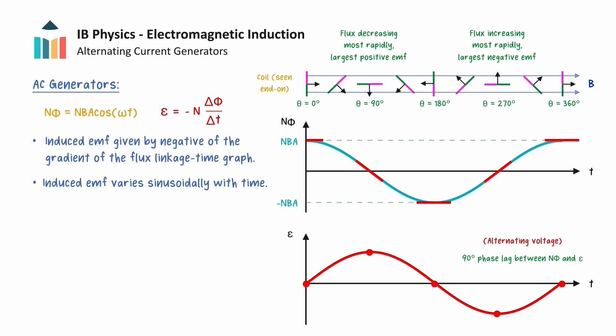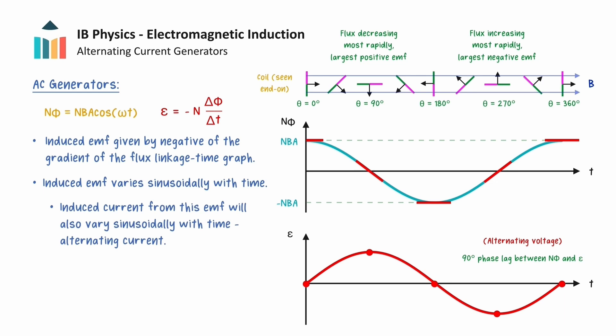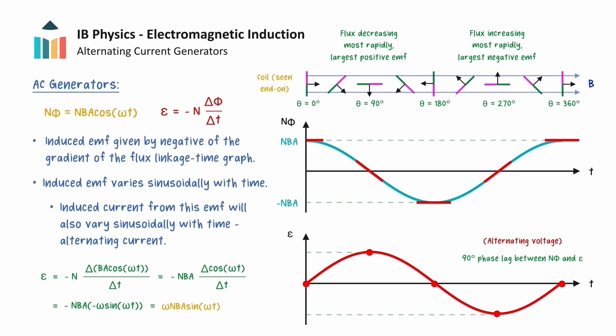Moreover, since we have a closed circuit, the induced current that results from this EMF will also vary sinusoidally in magnitude and direction, and this is known as an alternating current, hence the name of an alternating current generator. Students familiar with calculus will recognise that if we calculate the negative rate of change of flux linkage with time explicitly using differentiation, we find that the induced EMF does indeed vary as a sine wave with time, and the maximum positive and negative values of EMF are given by positive and negative omega NBA. Use of calculus is not expected in this course however.